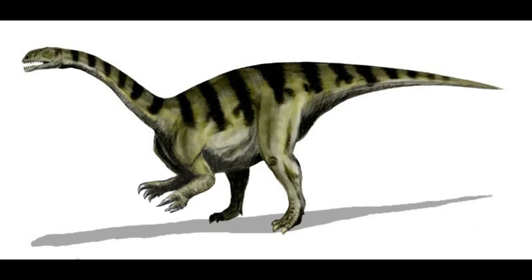During the Triassic, a group known as mammaliforms emerged, representing an intermediate stage between true mammals and their cynodont ancestors. These animals had advanced mammalian characteristics but still retained some primitive features. Morganucodon, for example, had a more derived jaw joint and middle ear structure than its cynodont relatives, indicating a transition towards true mammalian physiology.